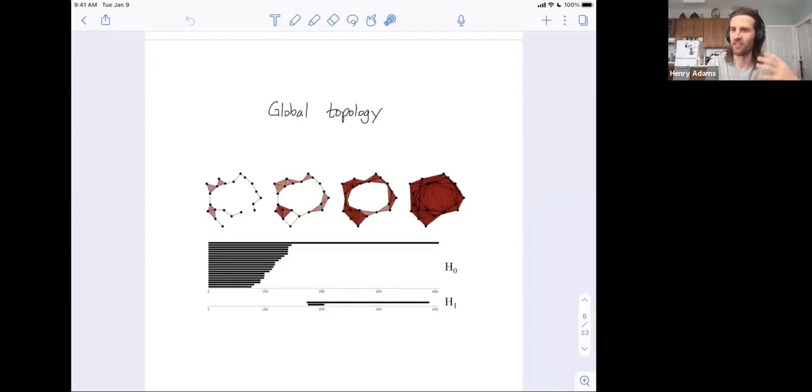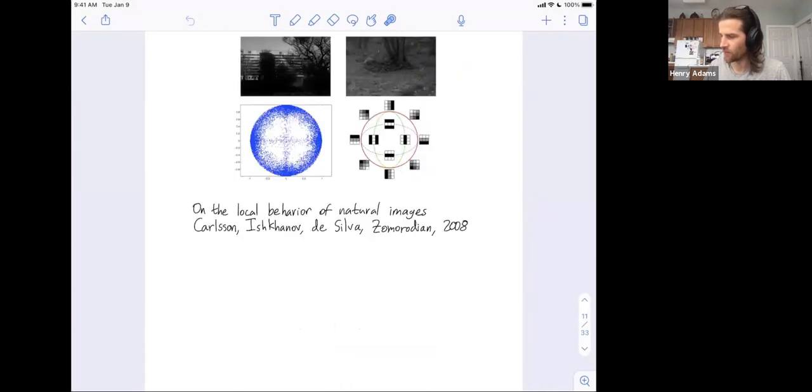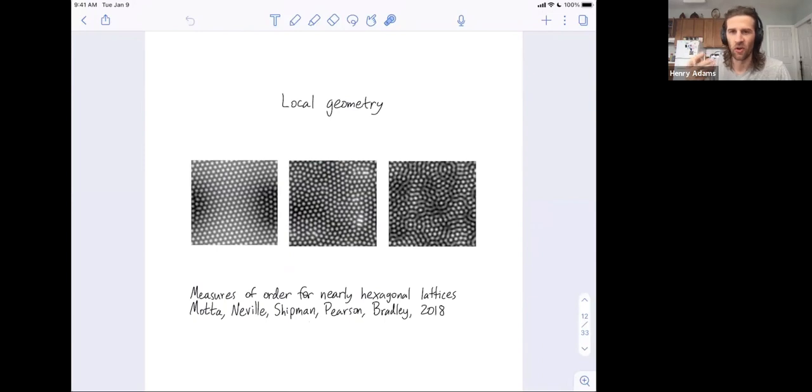And that's very much the case. There are rigorous theorems proving that under certain sampling guarantees, if you ignore the short bars, you can recover the homology of the underlying space from the long bars. But applied topology is being used for a lot of different things now as well, and this is largely brought on by machine learning. So applied topology is also being used to study what I would call texture or local geometry.